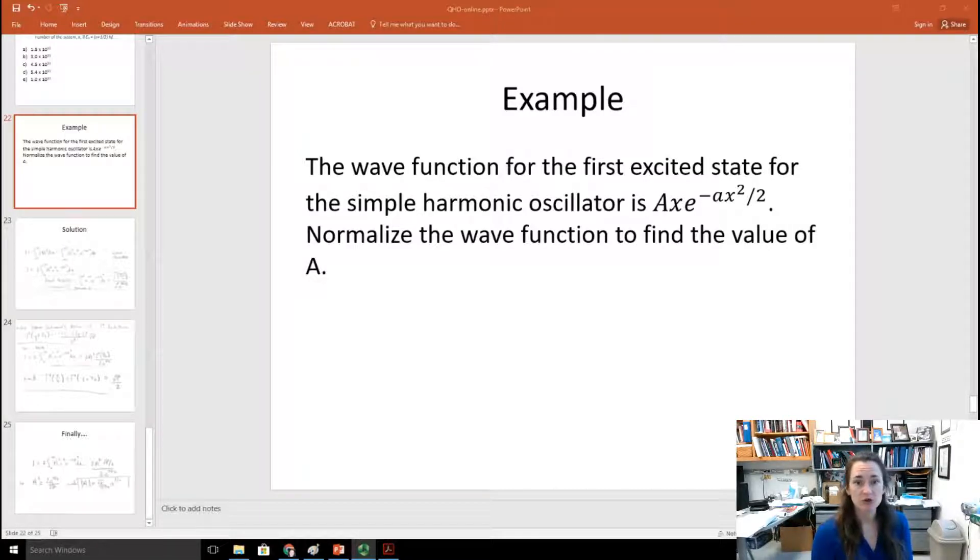In this problem, we're going to normalize the wave function for the first excited state for our quantum harmonic oscillator. The unnormalized version of the quantum harmonic oscillator's first excited state is ax e to the minus little ax squared over 2. And here, big A is going to be the part that we figure out when we normalize that wave function.